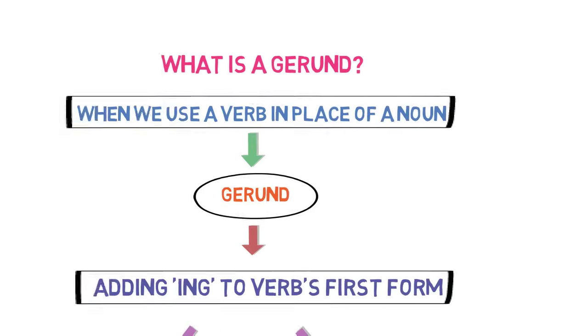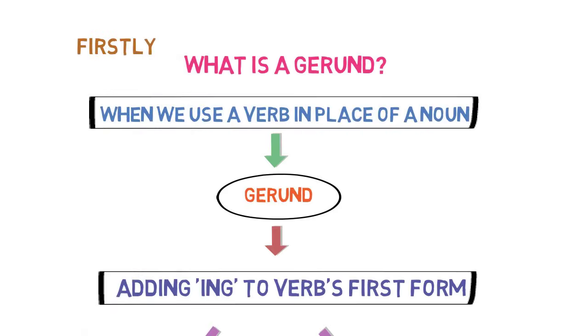That's all about gerund in this video. Let's quickly revise what we have learnt in this lesson. Firstly, we discussed what exactly is a gerund. It is a verb which acts as a noun in the sentence and it is created by adding ing to verb's first form.